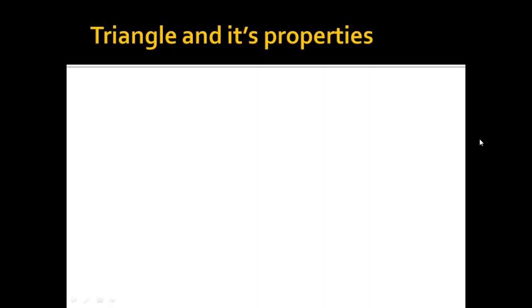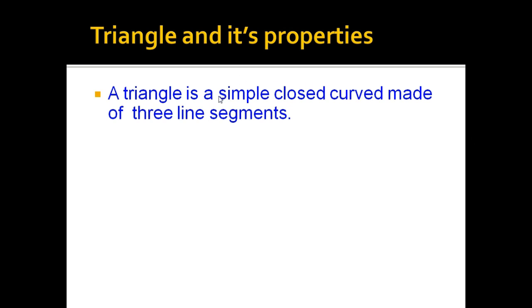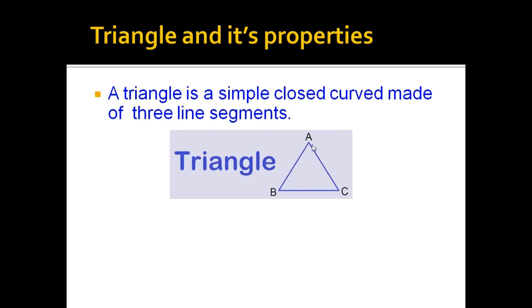Let's start with the basic definition: what does triangle exactly mean? A triangle is a simple closed curve made up of line segments. In the diagram with vertices A, B, and C, this shape is a closed curve made up of three line segments: AB is line segment one, AC is line segment two, and BC is line segment three.